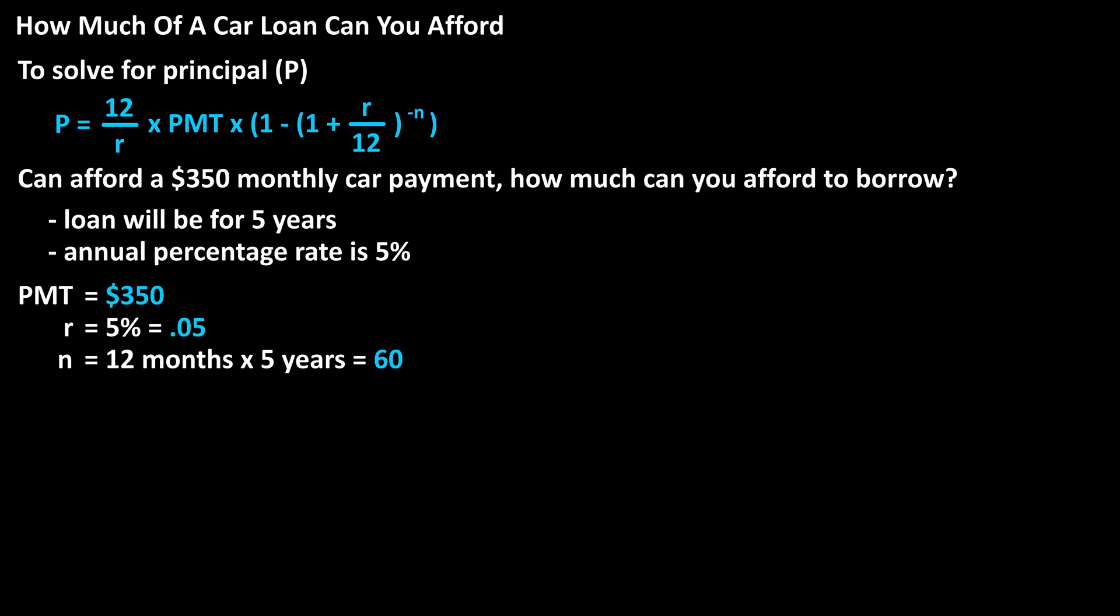Now we can plug into the formula, and we have principal, or the amount you can afford to borrow, equals 12 divided by .05 times $350, times the quantity, 1 minus the quantity, 1 plus 0.05 divided by 12, raised to the negative 60.